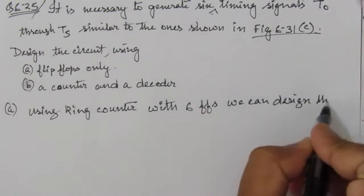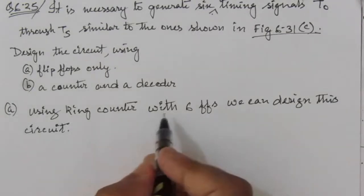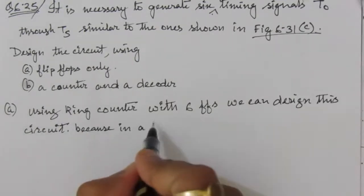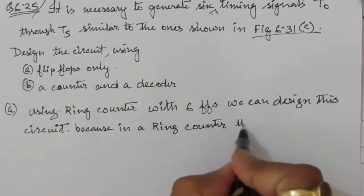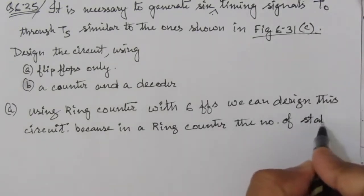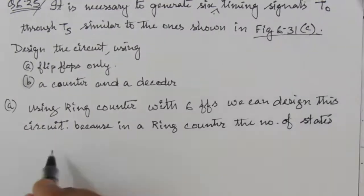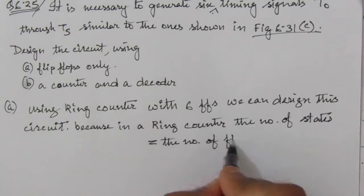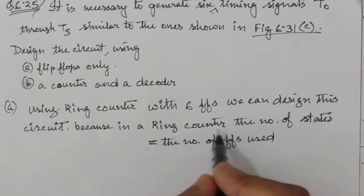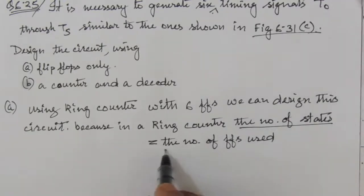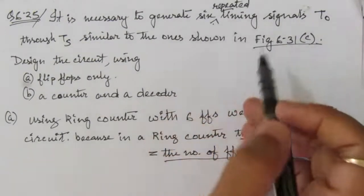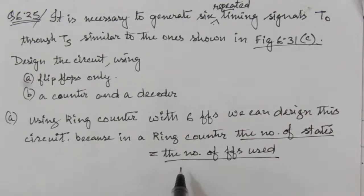Using a ring counter with 6 flip-flops, we can design this circuit. In a ring counter, the number of states it can count is equal to the number of flip-flops used. Since we have to generate 6 repeated timing signals, we need to use a 6-bit ring counter.